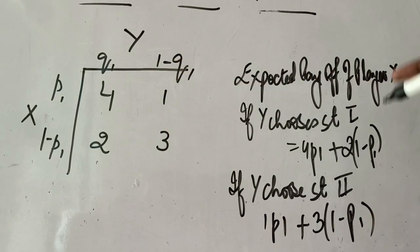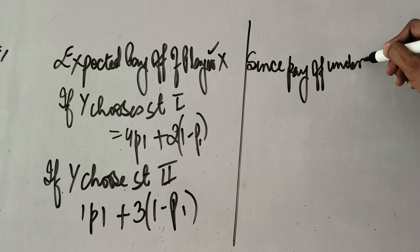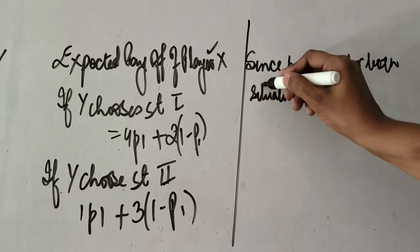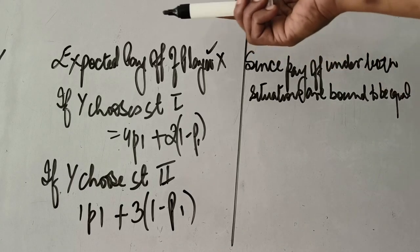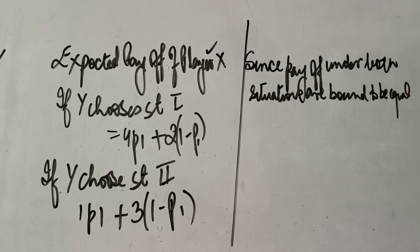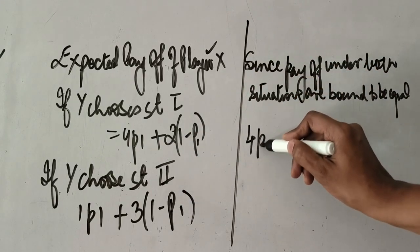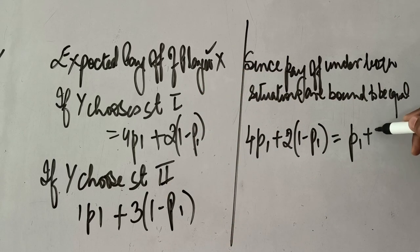Since the payoffs under both situations are bound to be equal — as this is the equal gains method, meaning whether Y chooses the first or second strategy, the payoff should be equal — we set them equal. So our equation becomes: 4p1 plus 2(1 minus p1) equals p1 plus 3(1 minus p1).